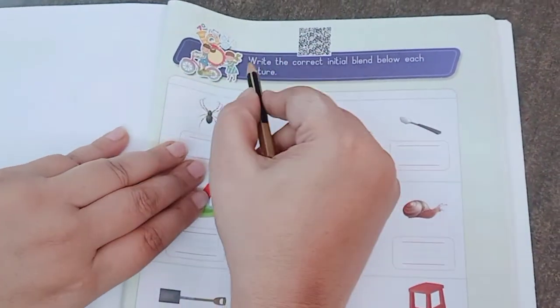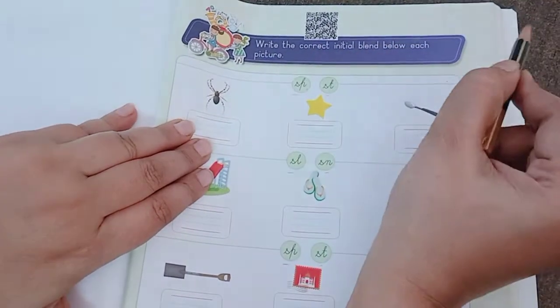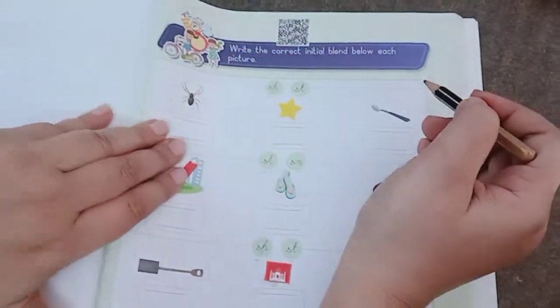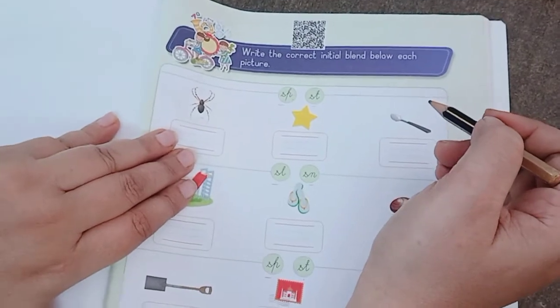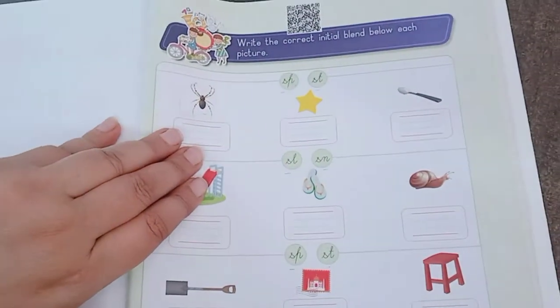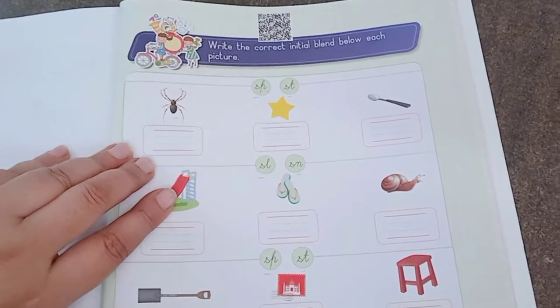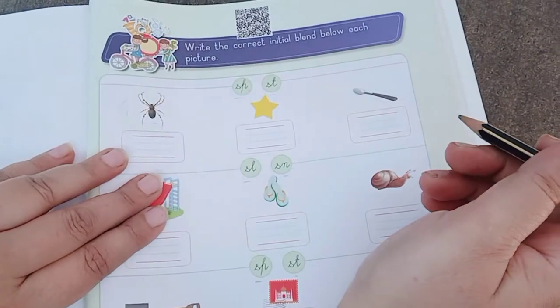Now, what we have said, write the correct initial blend below each picture. We have to recognize the first picture, speak their names and pronounce them, and then focus on which blend is used in starting.